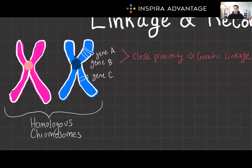Probably the most often tested is crossover in meiosis — this is very classic. During meiosis one, homologous chromosomes can exchange genetic material. This process introduces new genetic combinations and is a key player in the genetic diversity of sexually reproducing organisms. That's us.